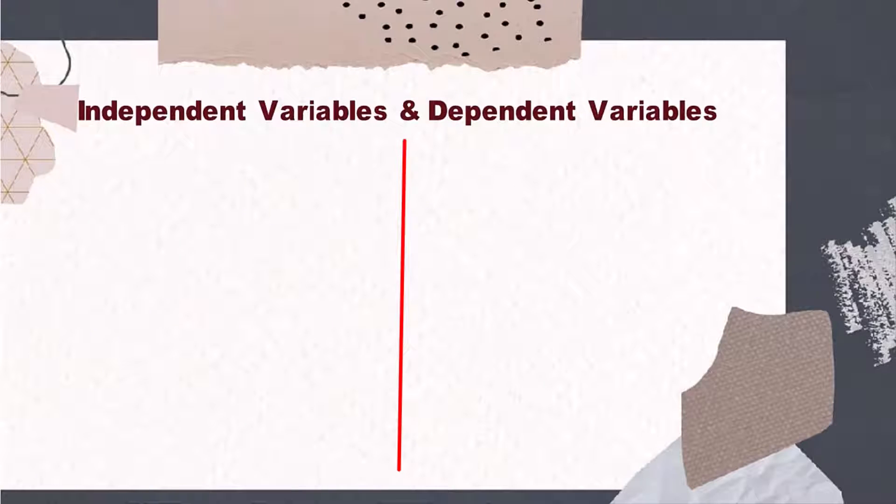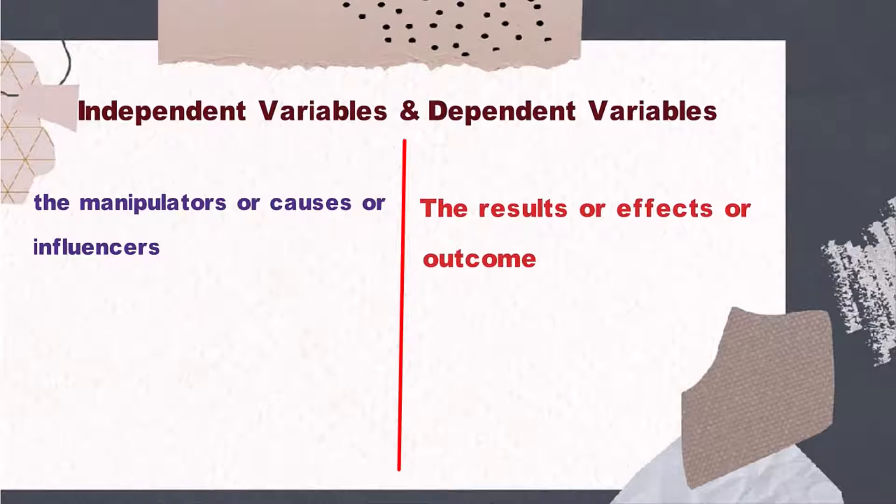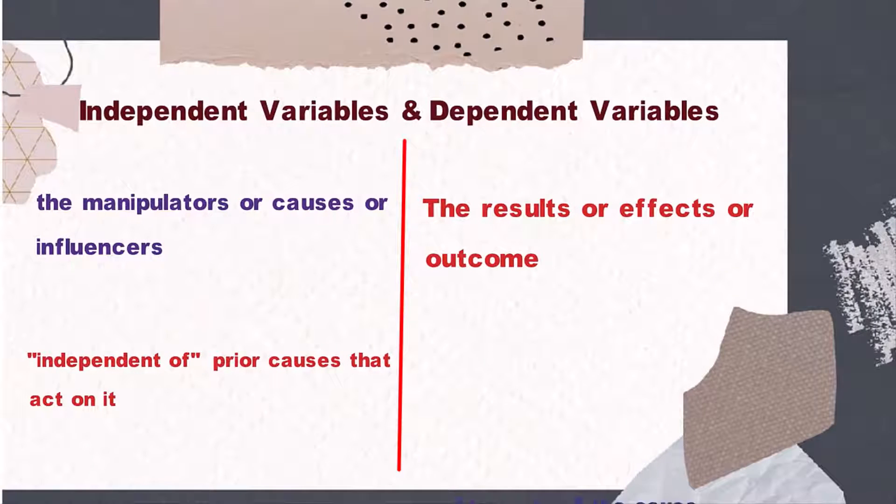Differences between independent variables and dependent variables: Independent variables are the manipulators, causes, or influencers, while dependent variables are the results, effects, or outcomes. Independent variables are independent of prior causes that act on them, while dependent variables depend on the cause.